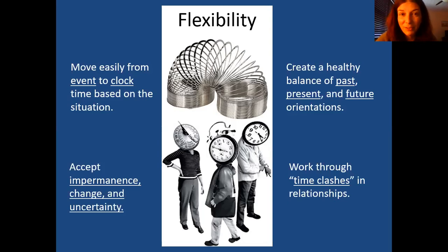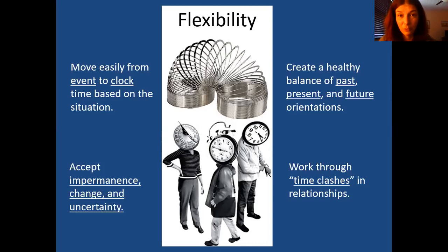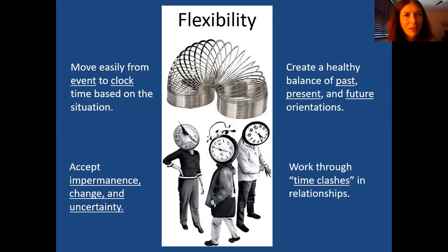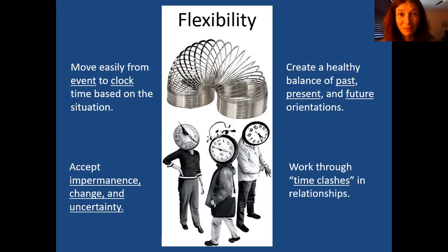We also need to work through time clashes in relationships. If I'm very clock-time oriented — on schedule, making things exact — and my partner is much more event-time, much looser, this can cause friction. Say we're supposed to go to a party at 3 p.m. and at 2:45 I'm saying 'hurry up, we have to leave,' while my partner says 'don't worry, we'll get there when we get there.' My anxiety goes up, they feel controlled. We have to work it out when a partner has a different time orientation.